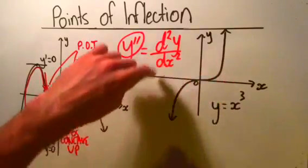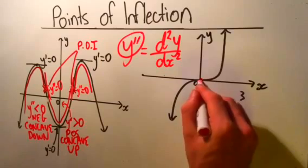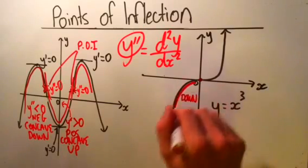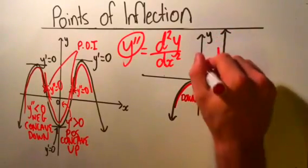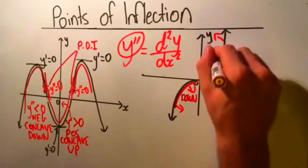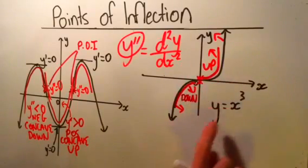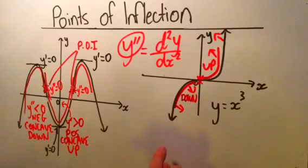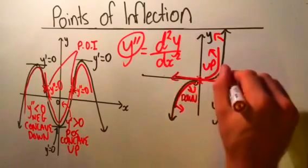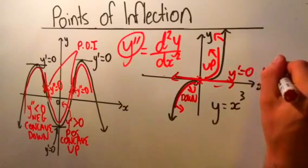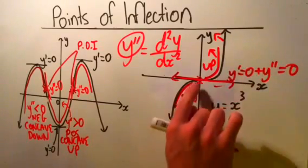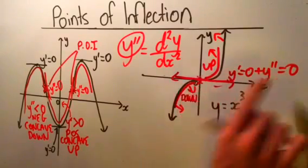But now let's move over to this graph. If I look at the point here where the curve goes from being concave down to being concave up — because this curve is going in like that, whereas this one is going up like this — it's at this point, at zero, for y equals x cubed, that the concavity changes. But if we look closer at this point, you'll also notice that the derivative there is zero. The derivative is zero and the second derivative is zero, because it's also a point of inflection. So the first derivative is zero — there's no gradient at that point — and that's also where the concavity changes.